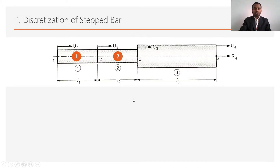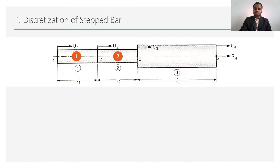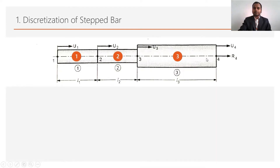The first cross section will be divided into two parts: element number 1 and element number 2. Element number 1 has node numbers 1 and 2, and element number 2 has node numbers 2 and 3, because the force is applied at the center of the first cross section. For the second cross section, there is no force applied, so this complete cross section will be treated as element number 3, with nodes 3 and 4. There are a total of 3 elements and 4 nodes in this numerical.